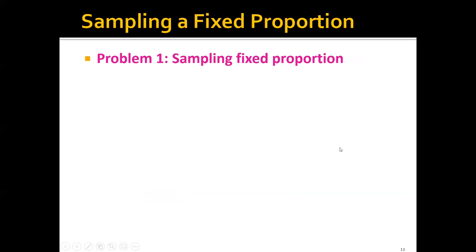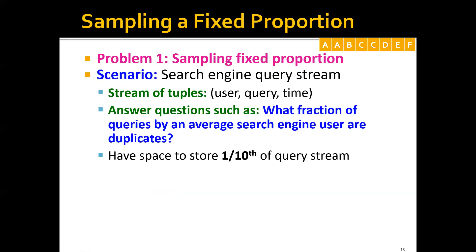The scenario is that in the search engine query stream, you have a string of tuples. These tuples are user, query, time tuples. We want to answer questions such as what fraction of the queries by an average search engine user are duplicates.